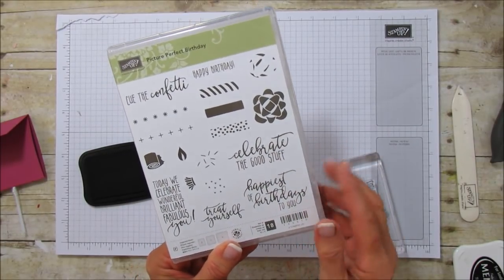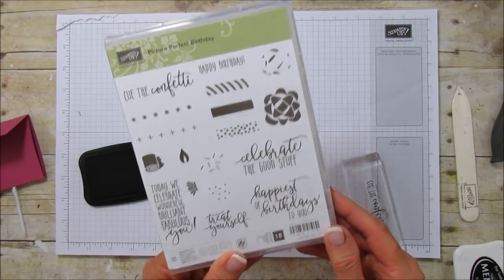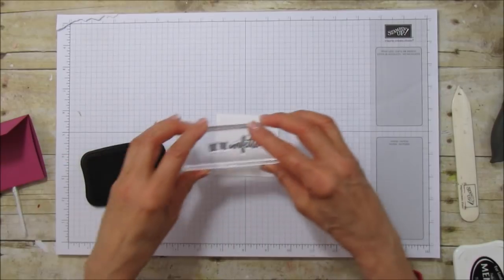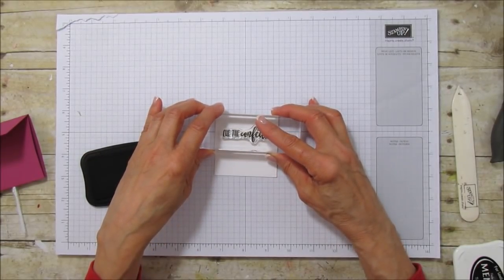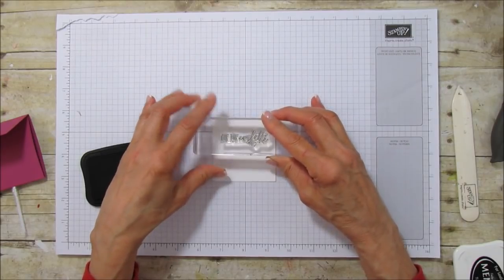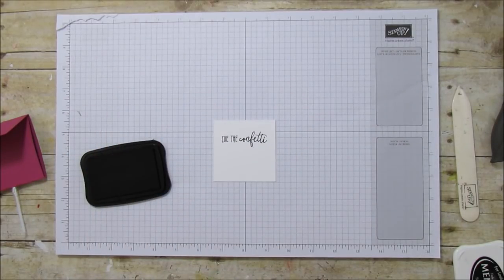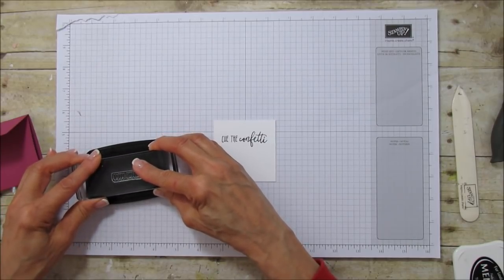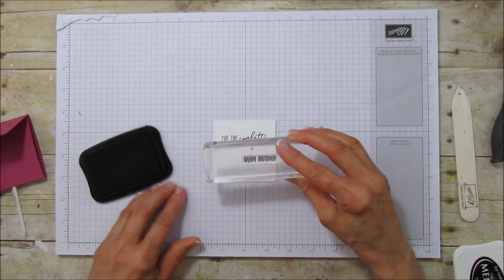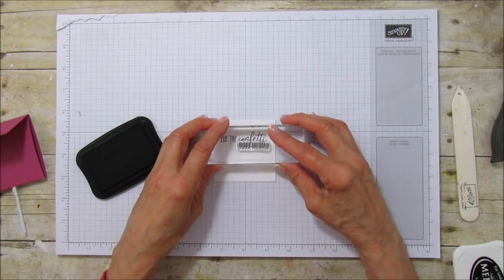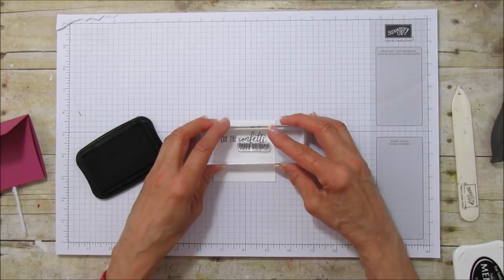So we are going to go ahead and stamp the cue the confetti and you're going to stamp it a little bit more towards the top. And then we're going to stamp the happy birthday from the same stamp set. And this little space between the happy and birthday fits pretty close to where that F hangs down, so that's how I did that, you can see it like that.